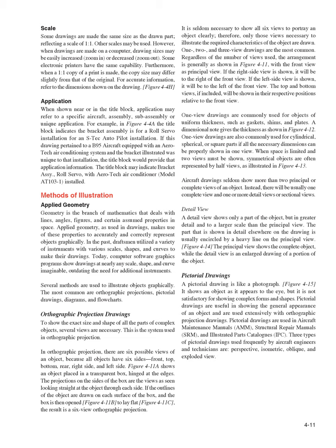Orthographic projection drawings: To show the exact size and shape of all parts of complex objects, several views are necessary. In orthographic projection, there are six possible views of an object — front, top, bottom, rear, right side, and left side. The projections on the sides of a transparent box are the views seen looking straight at the object through each side. When the box is opened to lay flat, the result is a six-view orthographic projection. It is seldom necessary to show all six views; only those views necessary to illustrate the required characteristics are drawn. One-, two-, and three-view drawings are the most common.